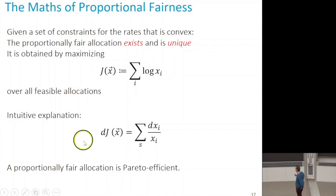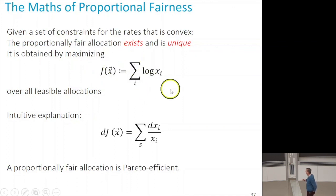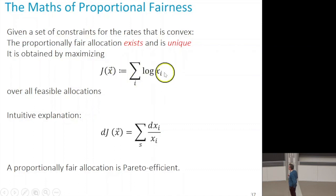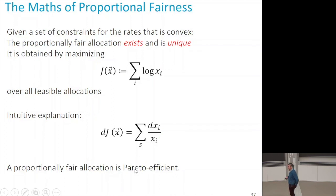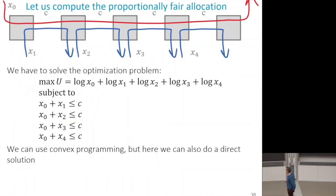The take-home message: like max-min fairness, the proportionally fair allocation exists and is unique. Computing it requires solving a convex optimization problem — maximizing the sum of the logarithms, which is a concave function. Because the logarithm is monotonic, the result is Pareto efficient: if the sum of logs is maximum, increasing one rate increases its log, so we must decrease the log — and thus the rate — of another source.